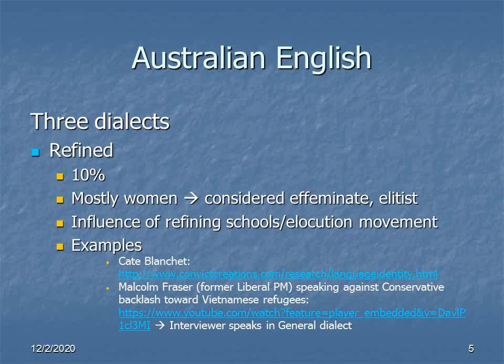As for this particular context, the dialect seems to be a product of something called the elocution movement, which occurred in Australia in the later 19th and early and mid-20th centuries, specifically in girls' refining schools. The teachers in these schools tended to be educated in received pronunciation, so the refined Australian accent is very similar to RP — it's basically what you get if you mix general Australian with received pronunciation.